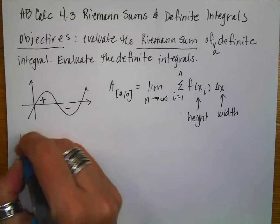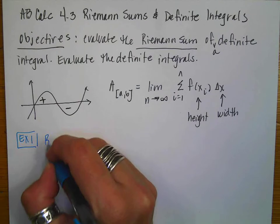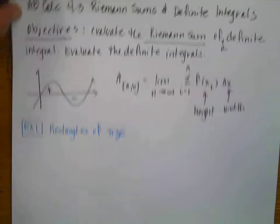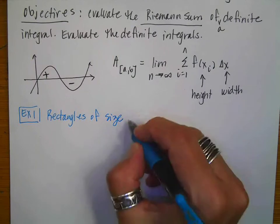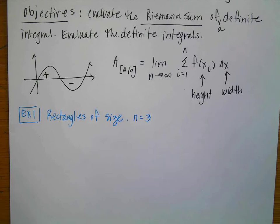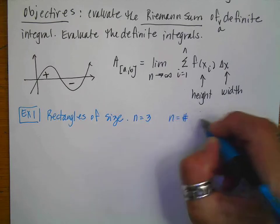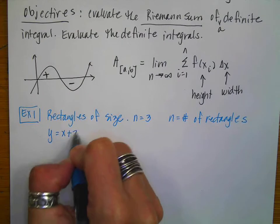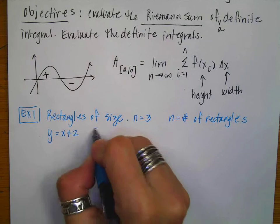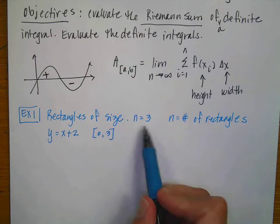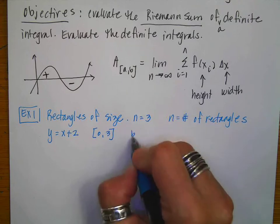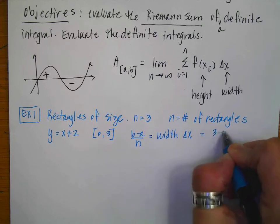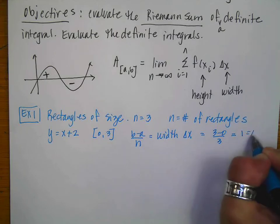So I'm going to start in with our first example. We're going to have rectangles of equal size — it doesn't matter whether the rectangles are equal size or not, but for the beginning that just makes the problem a little bit more straightforward. We're going to have three rectangles, and remember n is the number of rectangles. Our function is going to be y equals x plus 2, and I'm going to go from 0 to 3. If I have three rectangles, I can do b minus a divided by n to find delta x, so that would be 3 minus 0 divided by 3, giving delta x equals 1.